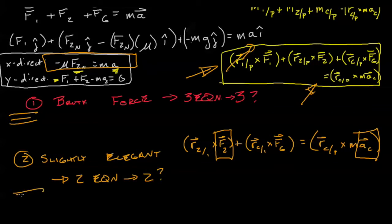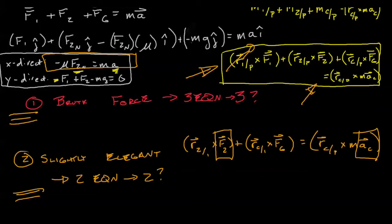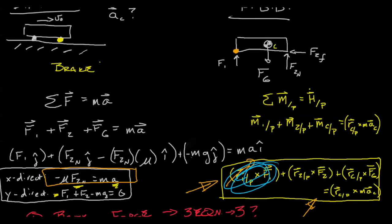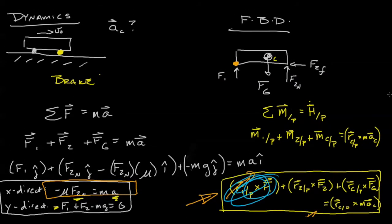Now in this situation, we took advantage of the fact that we could choose any point we wanted to eliminate one of the terms, and it was this term. Let's see if we can think that one through a little bit more. I know that if I choose a point such that the cross product goes to zero, I can eliminate that term from my equation.